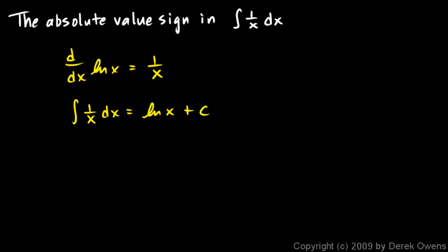You might remember the picture of the graph of natural log of x. It looks something like this — it crosses the axis at 1, it's asymptotic to 0 there, and then it grows as we go to the right. But it doesn't exist over here where x is negative. It only exists for x greater than 0.